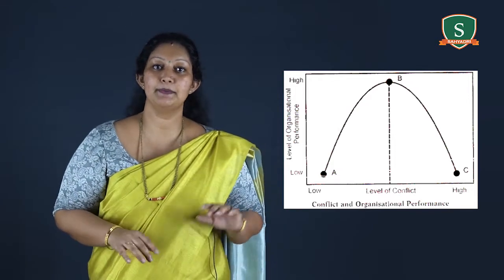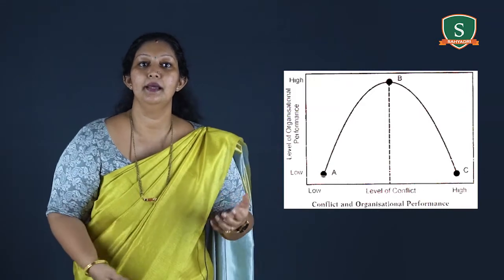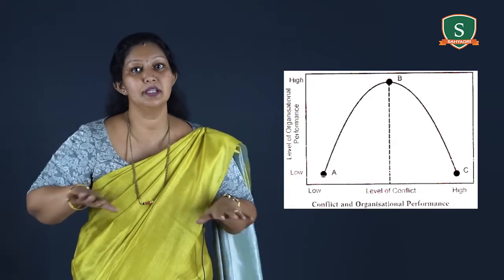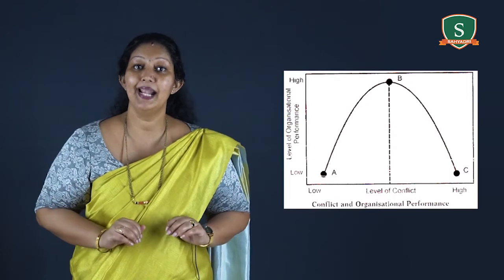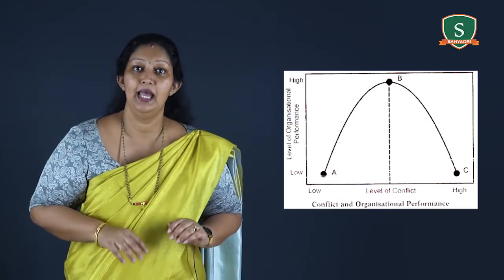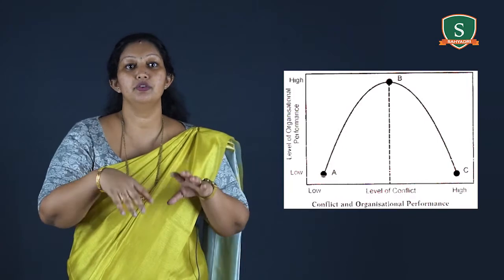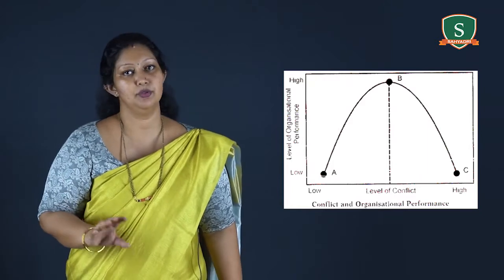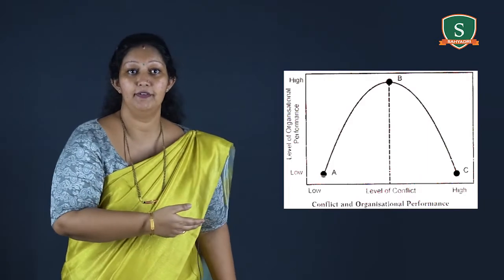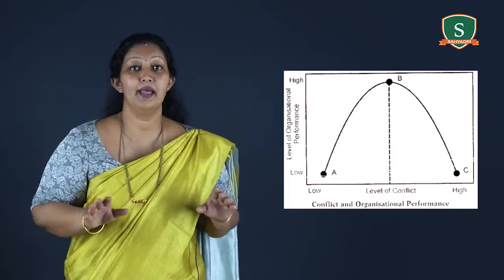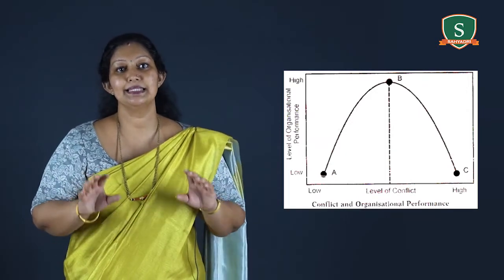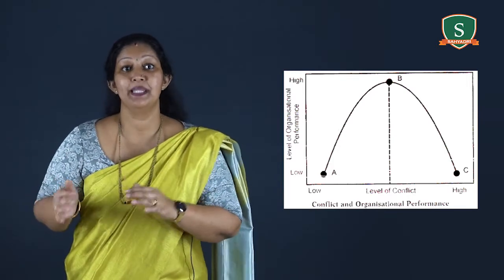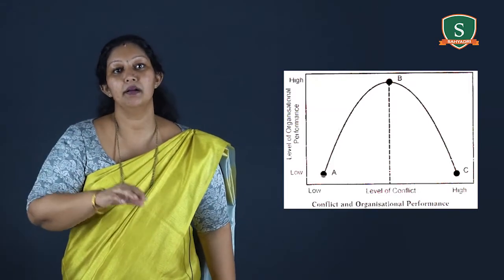At a low level of conflict, that is at point A, there is usually unanimity of opinions. People agree with each other and there is no stimulation to change. People are not adaptive to environmental challenges and therefore do not search for new ideas, so organizational performance tends to be low. At a high level of conflict, that is at point C, people do not agree with each other. There is lack of cooperation amongst their activities, behavior, and nature. This leads to lack of discipline in the organization.